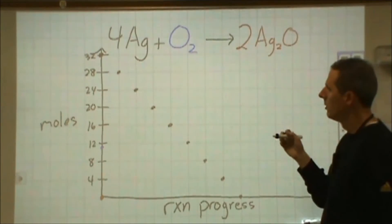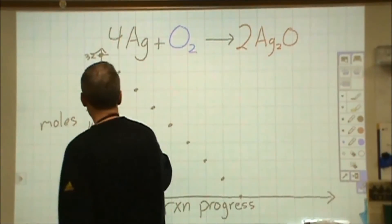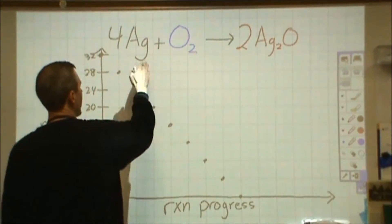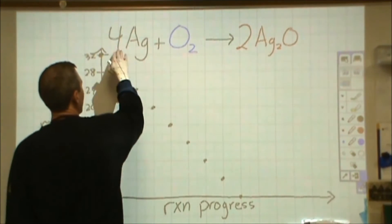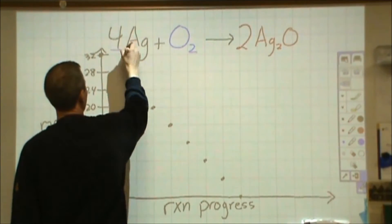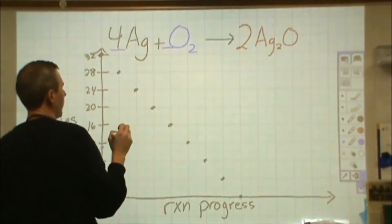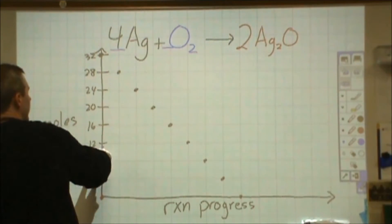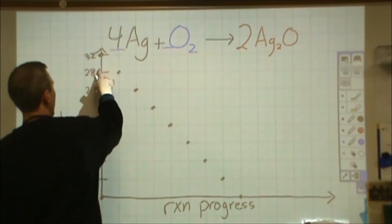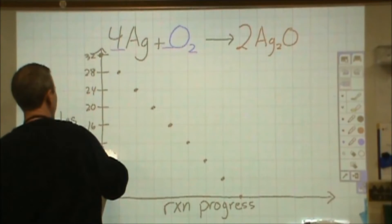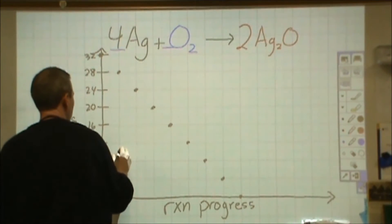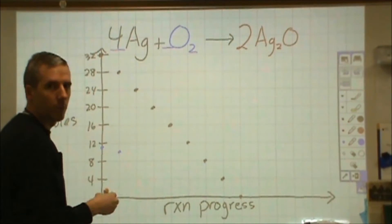With the oxygen, since as I move over one, I'm using up the same amount of chemical in proportion, I use four silvers for every one O2. So as I move over one space, instead of going down four like I did for silver, I'm going to go down one-fourth that amount, I'm going to go down one mole per space.